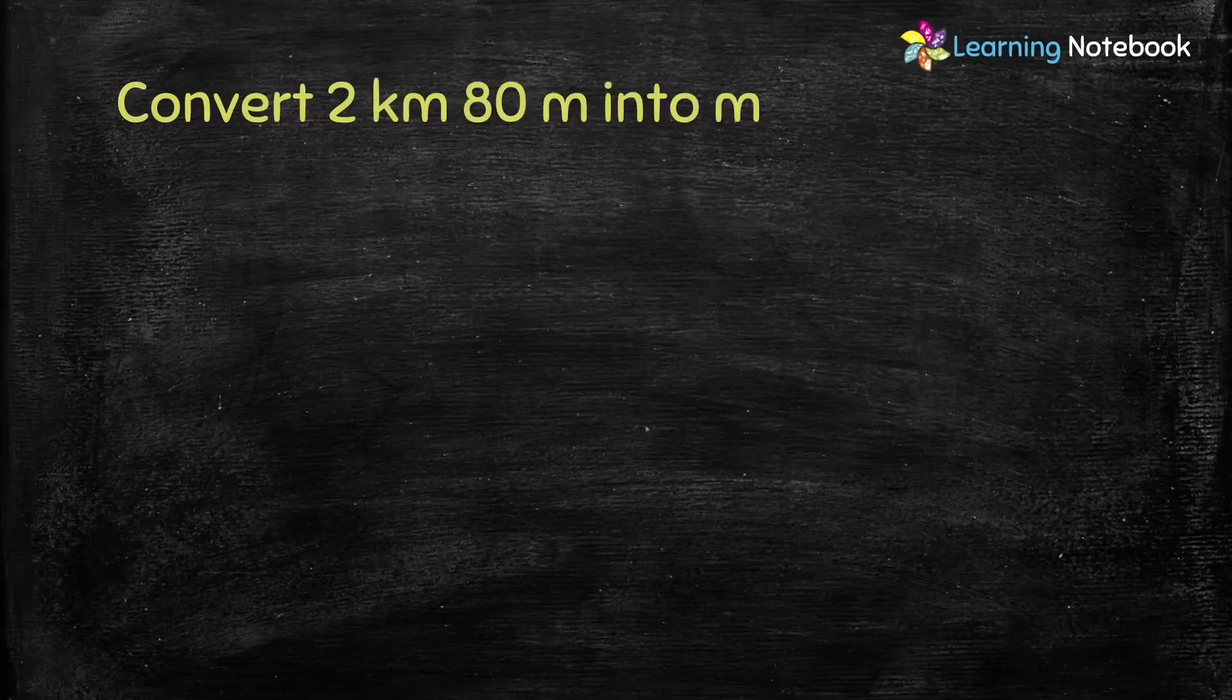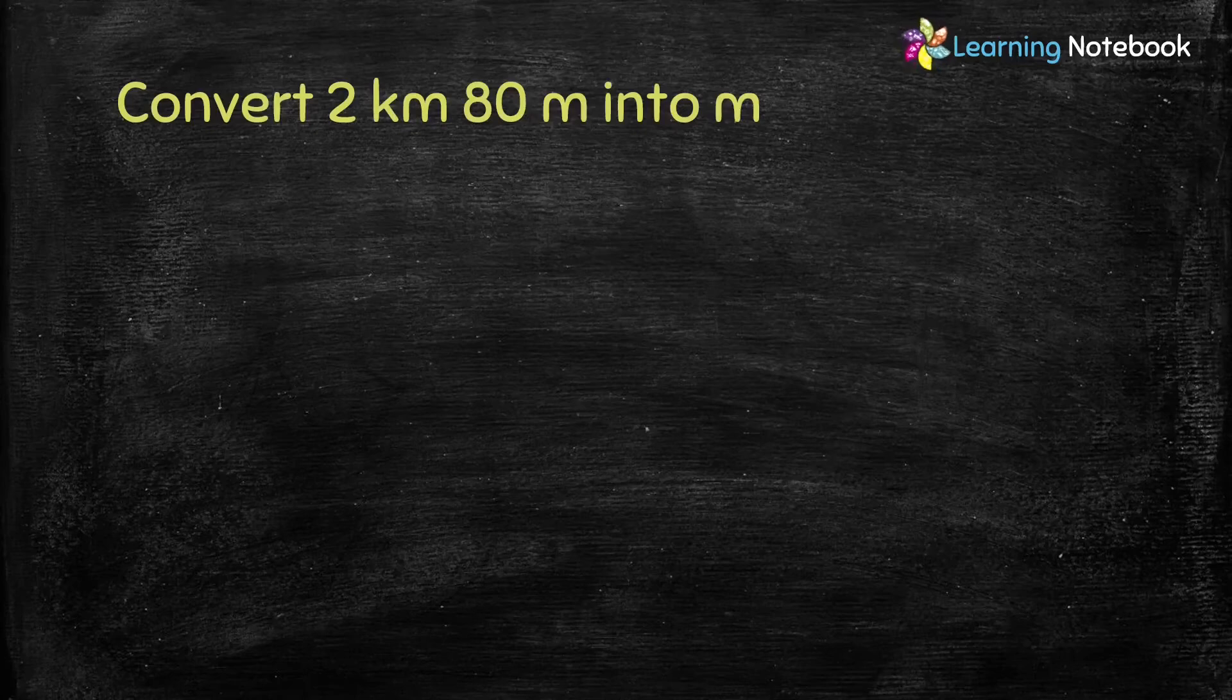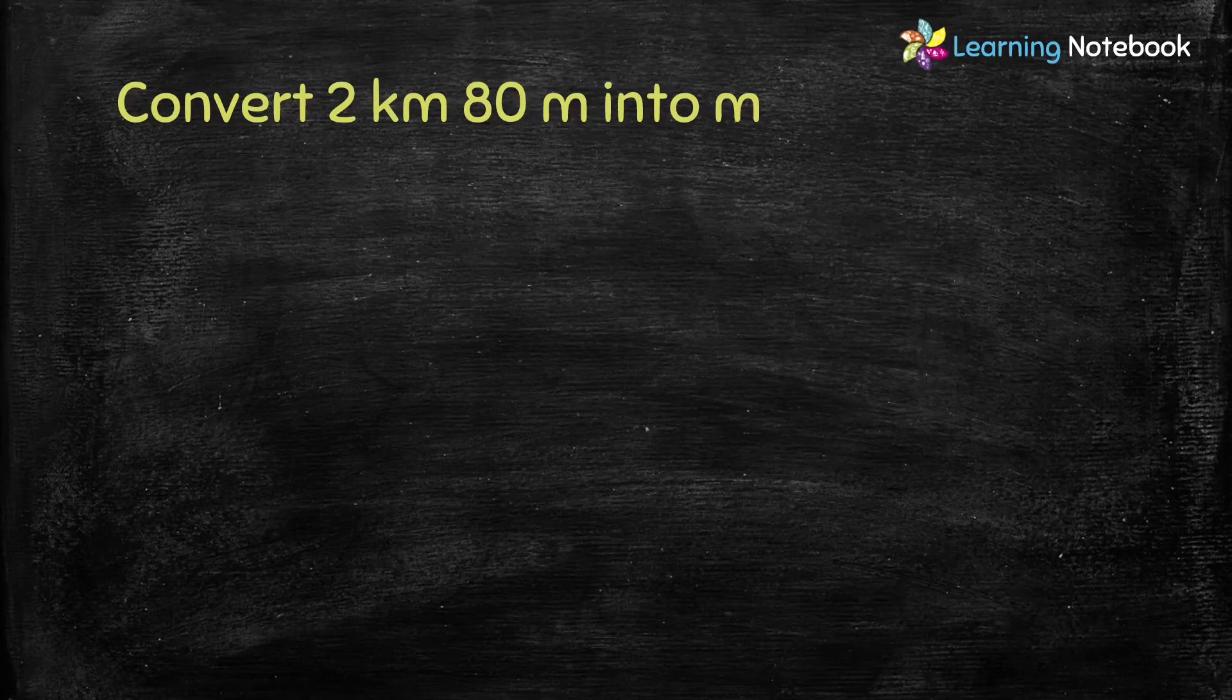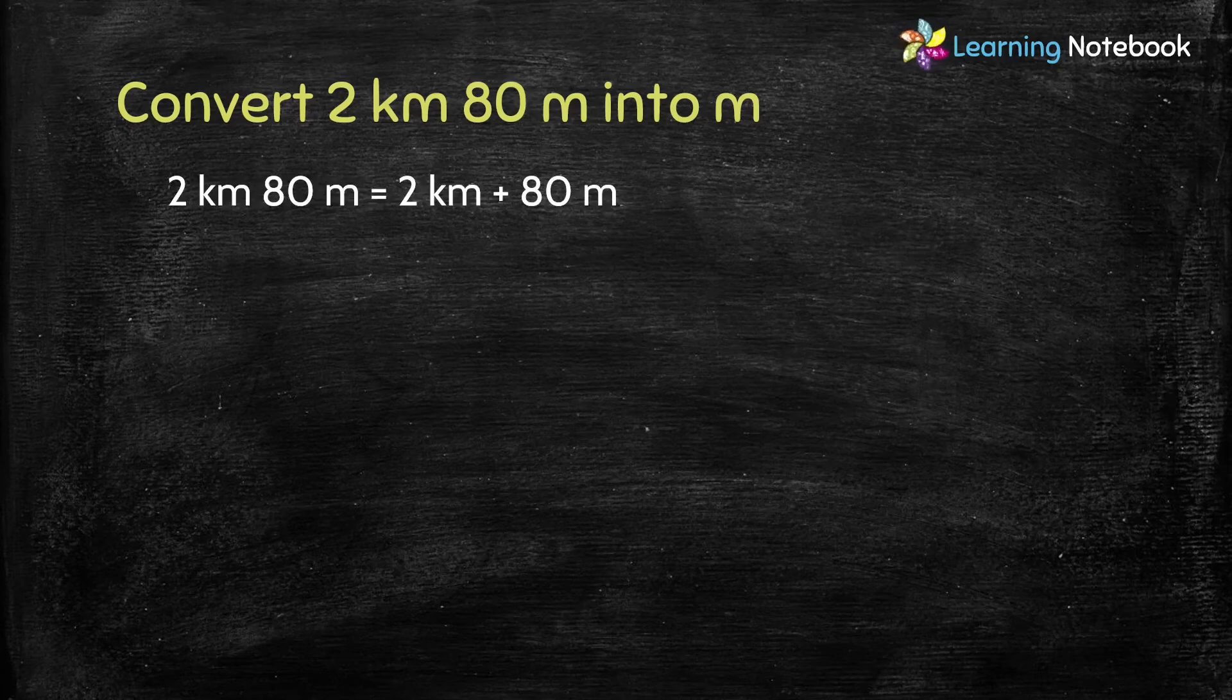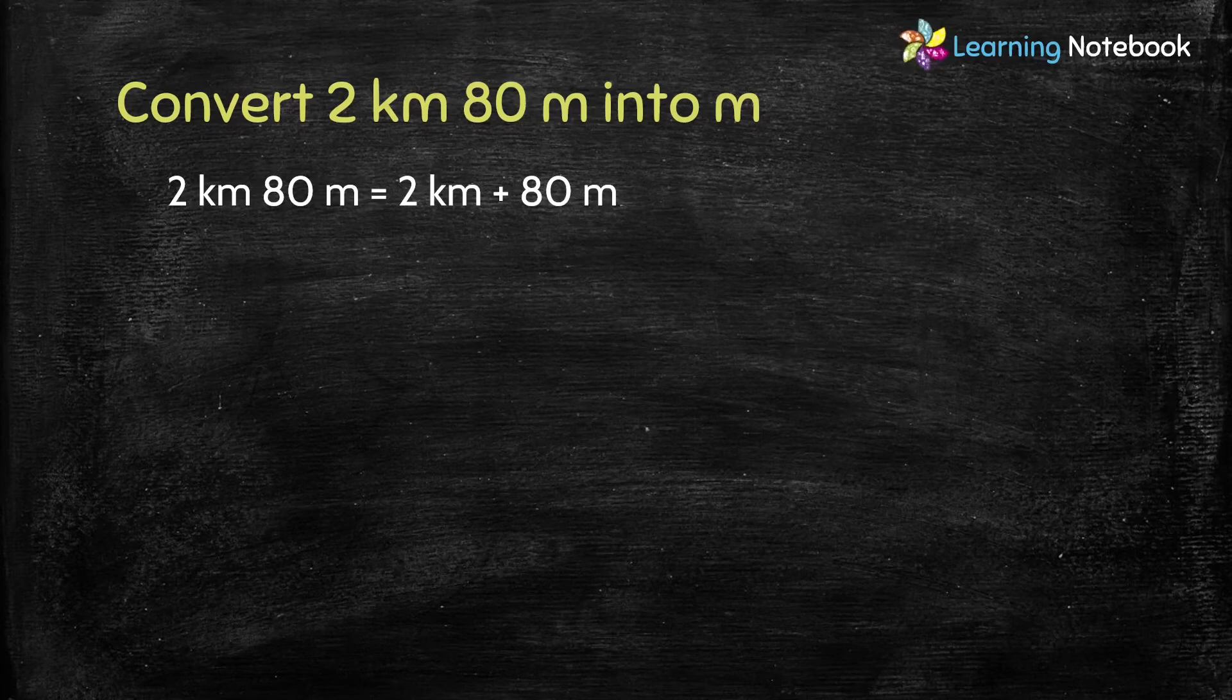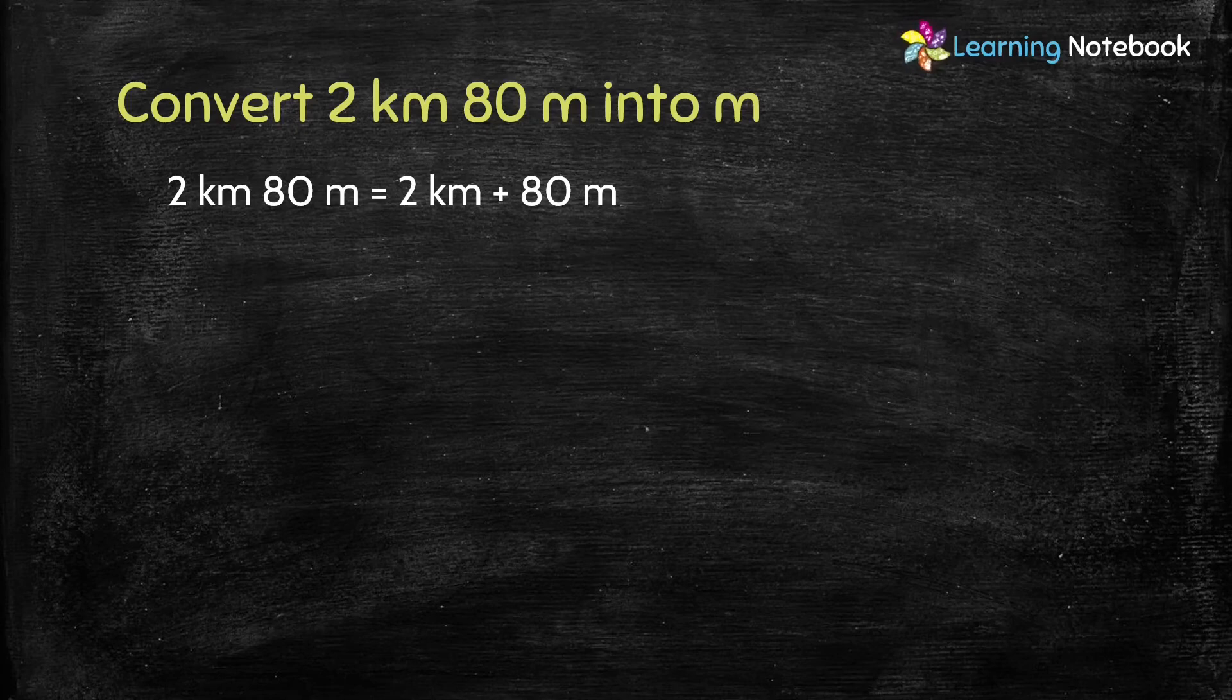Now, the last question is, convert 2 kilometer 80 meter into meter. Students, 2 kilometer 80 meter can also be written as, 2 kilometer plus 80 meter. So, here, we just need to convert 2 kilometers into meters. Because, 80 is already in meters.